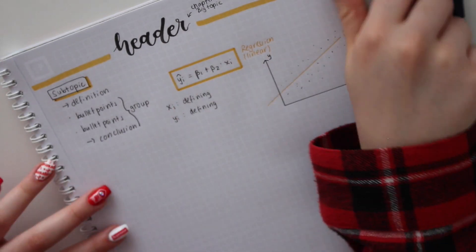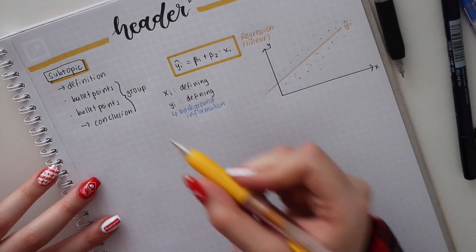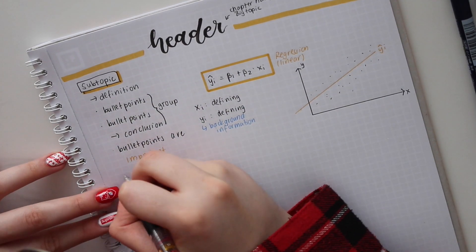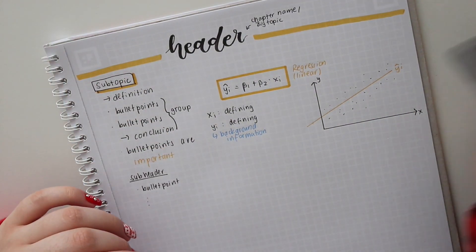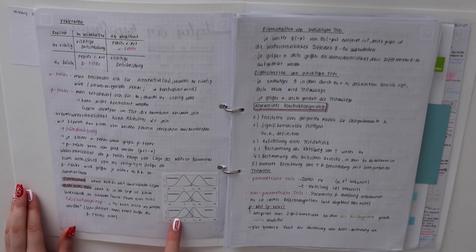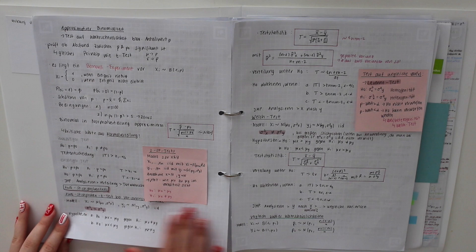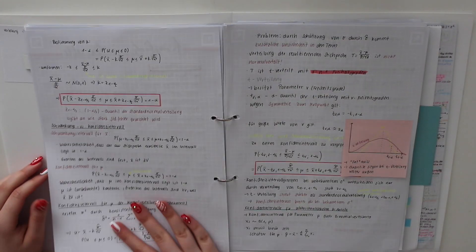When I do graphs, I usually use the color from the whole theme - in this example I'm showing a regression line, and I define the variables. With my blue color I use that for background information about certain bullet points or definitions. When something is important, I don't highlight it but instead use a different color. I also use sub-headers. These are my statistics notes, and as you can see I also print out pictures and put them onto my notes. The notes look organized, and I can remember things a lot better with that system.